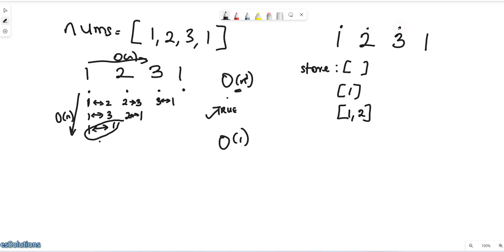Three, does three exist? Doesn't exist so we add it to our dictionary. Go to the last one, does one exist? Check it, says yes one exists, and since one exists we return true. So let's use the second example where we had one two three four.